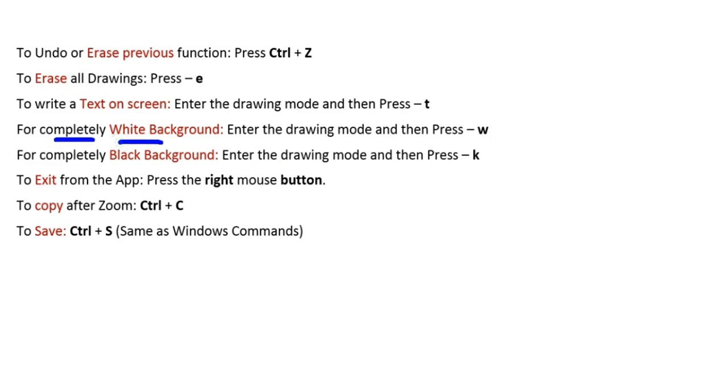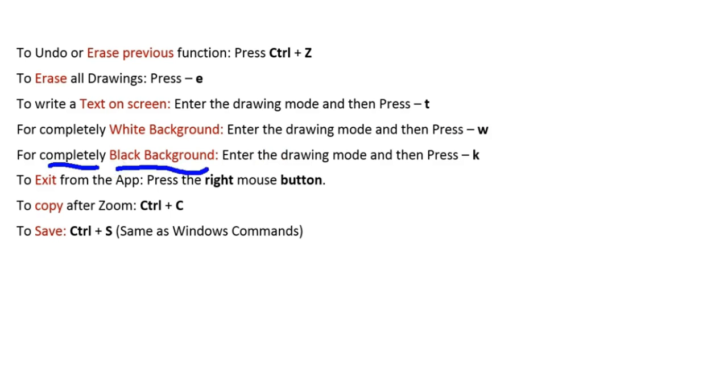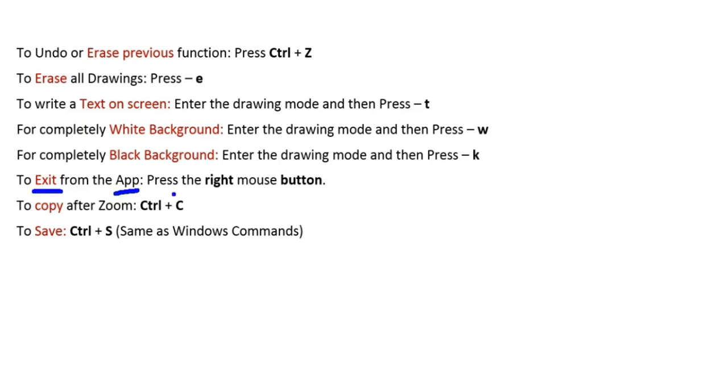There is also an option to have a completely white or black background on the screen. To get a white background, go into zoom mode and press W. You can then type something by pressing T to enter typing mode. Press K to get a completely black background, and again press T to type. To exit from the app, press the right mouse button.